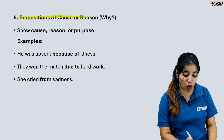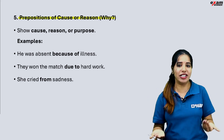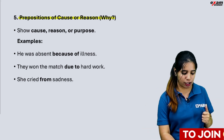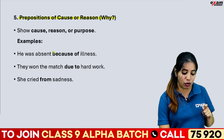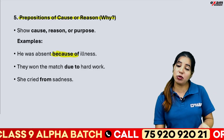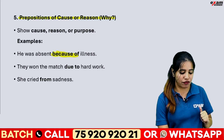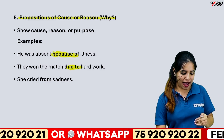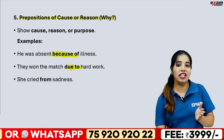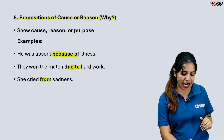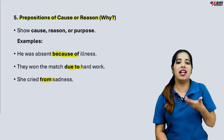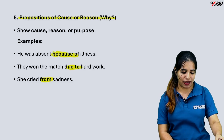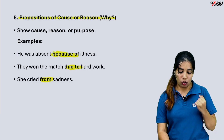Prepositions of cause or reason — why? For example: 'He was absent because of illness.' 'They won the match due to hard work.' 'She cried from sadness.' So this is the cause and reason category.